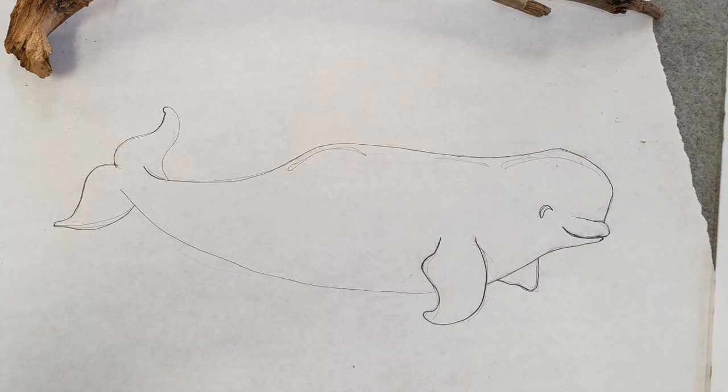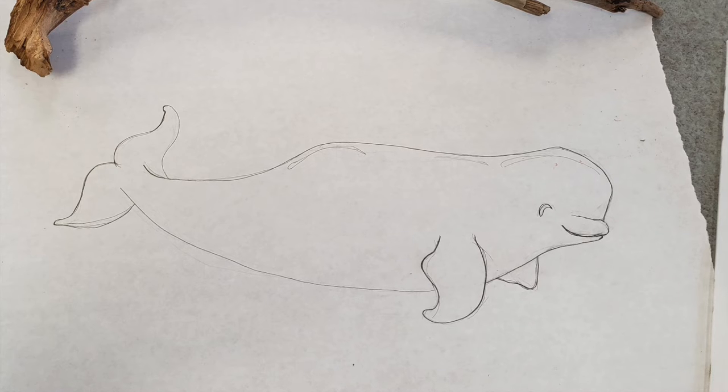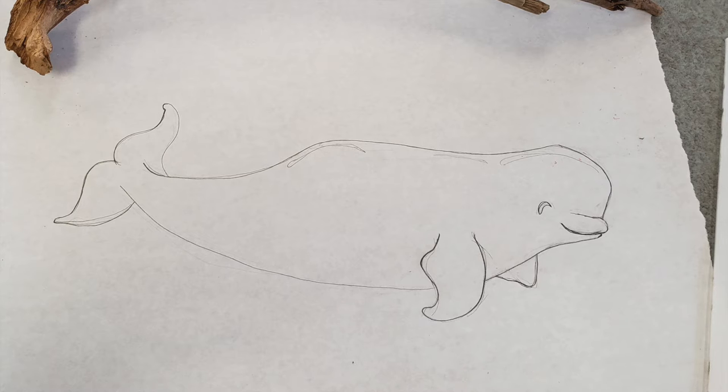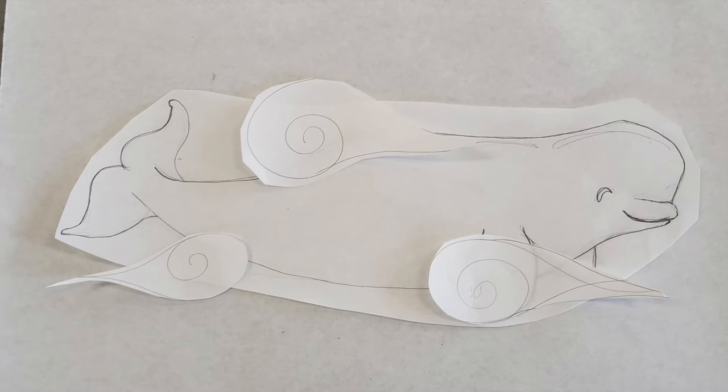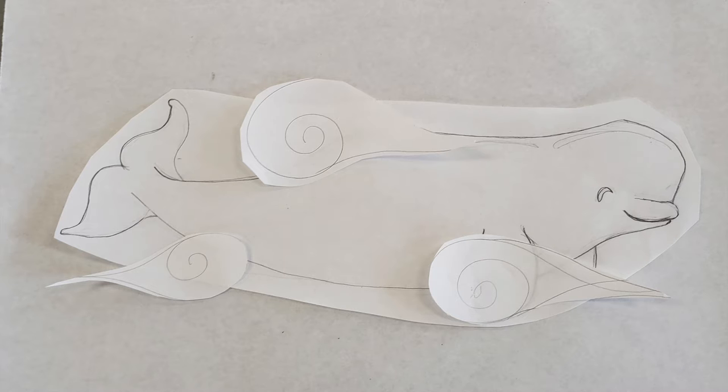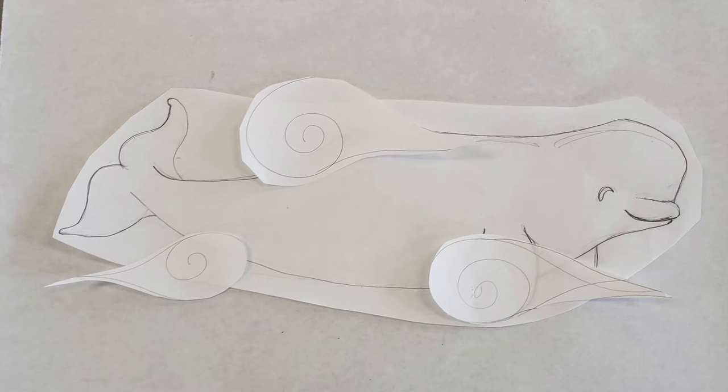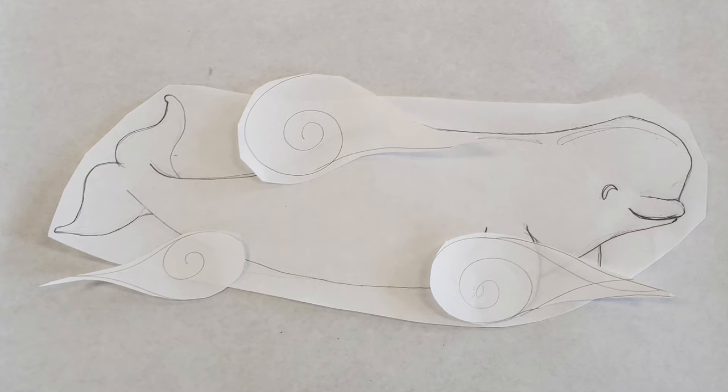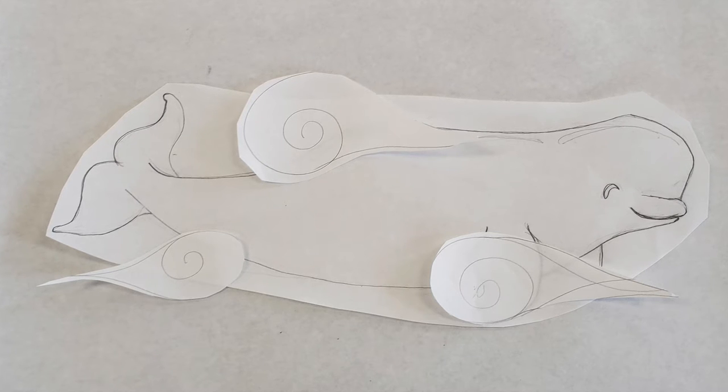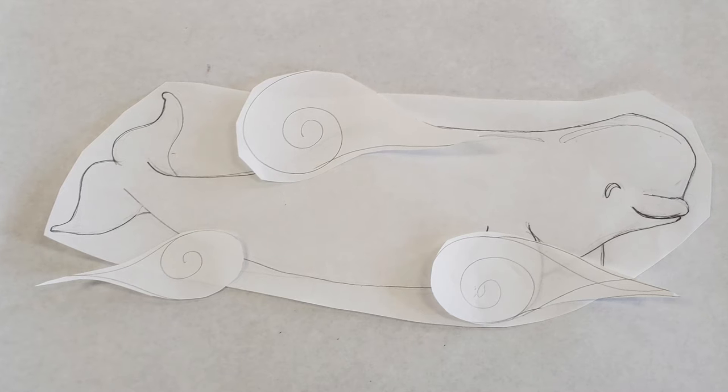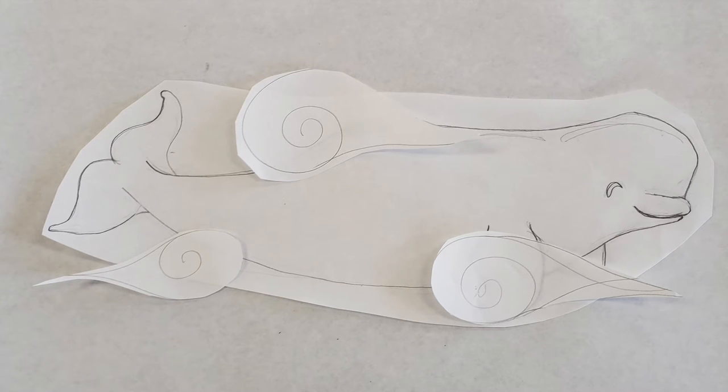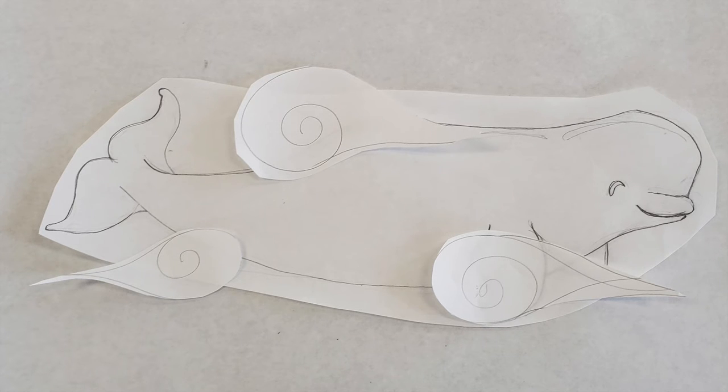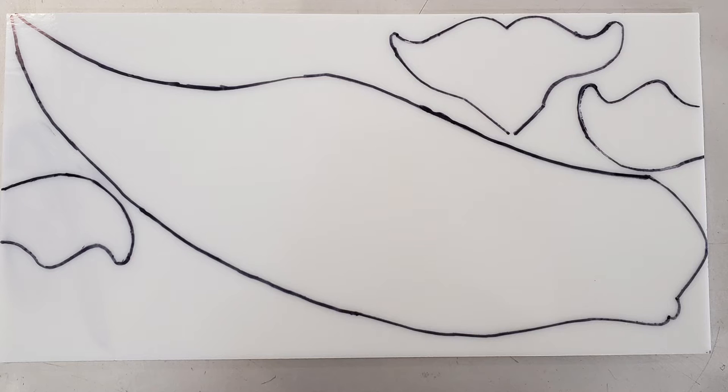I always recommend sketching out your designs for projects ahead of making them, especially if it's something you've never made before. This will help you visualize your finished product and plan out your firings. I also sketched out some other little water components, little water whirls that are going to accompany my beautiful Beluga. Once I've figured out all the components that I need to make, I'm going to figure out how I'm going to cut them out of glass next.